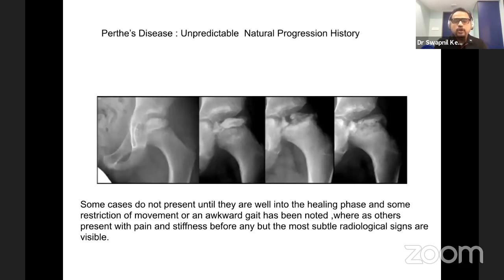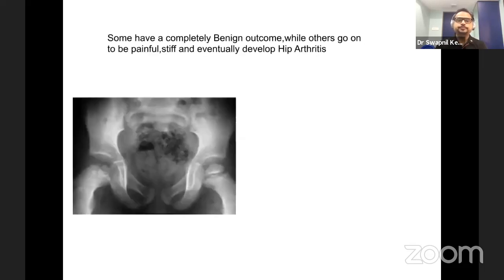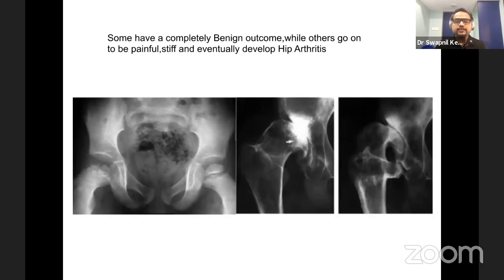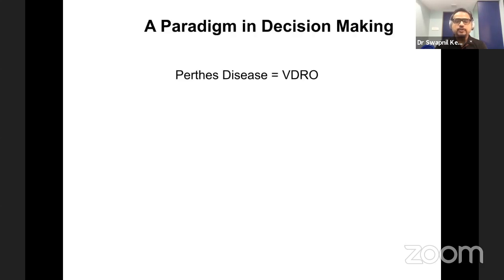Though we all know that Perthes heals on its own, the natural history is unpredictable. Some cases present late in the healing phase with very minimal involvement and a little awkward gait, while some present very early with significant stiffness and subtle signs on radiology. Some have a completely benign outcome whereas others tend to develop very severe arthritis. We need to understand why this happens and what can we do to prevent these complications.